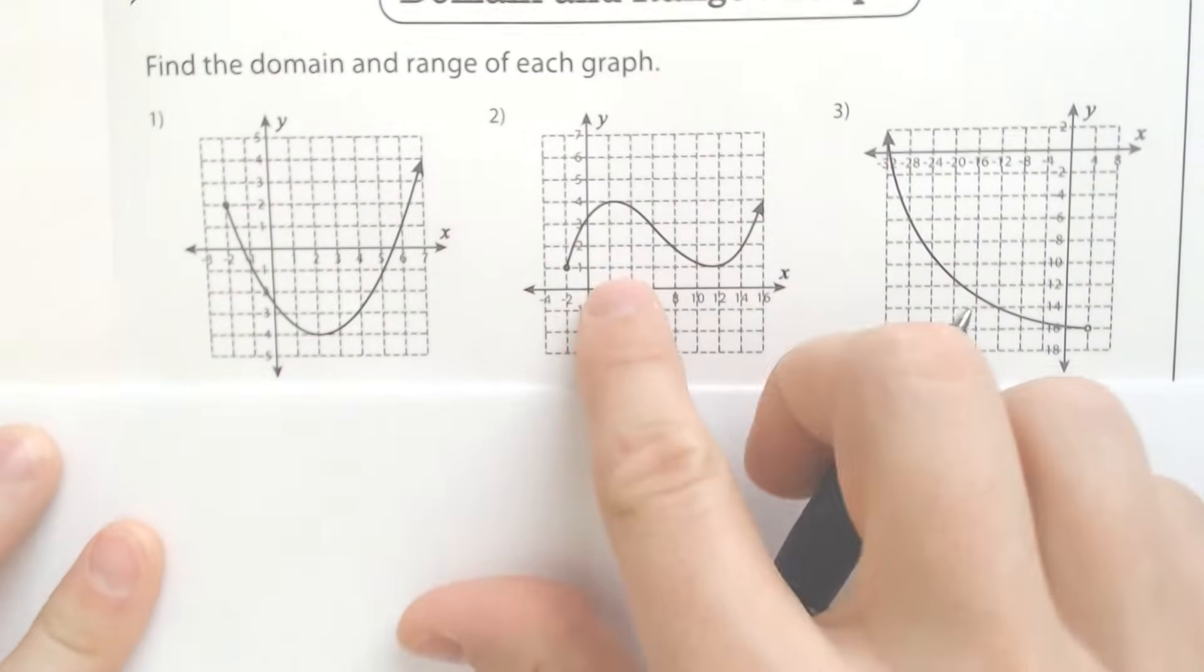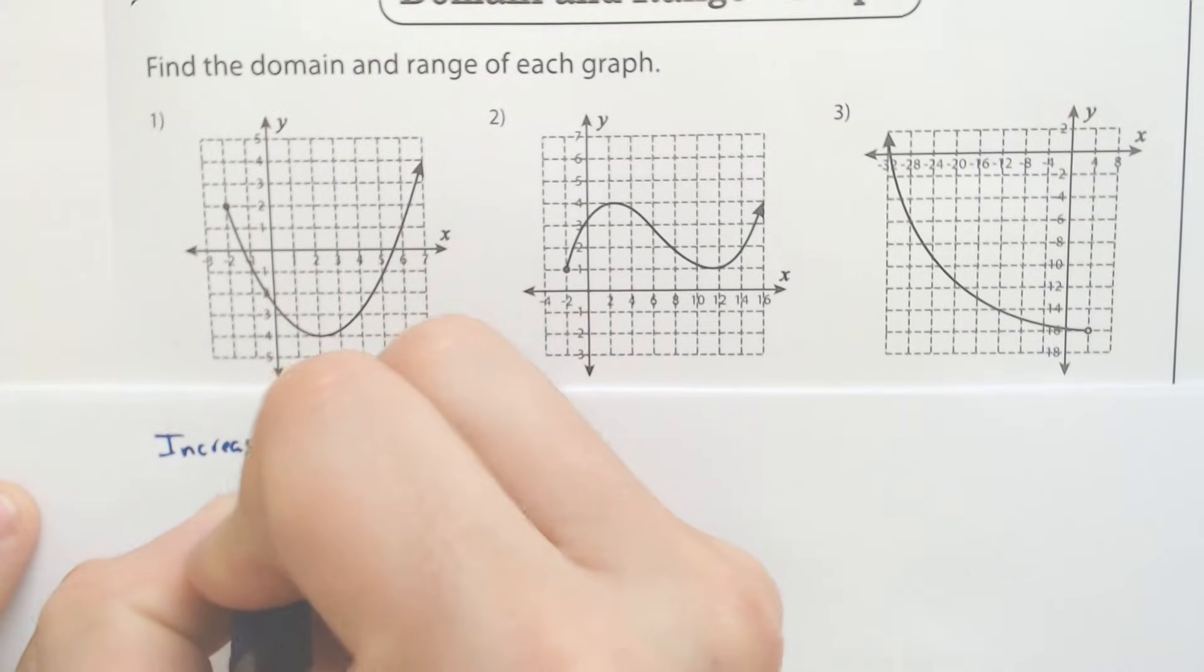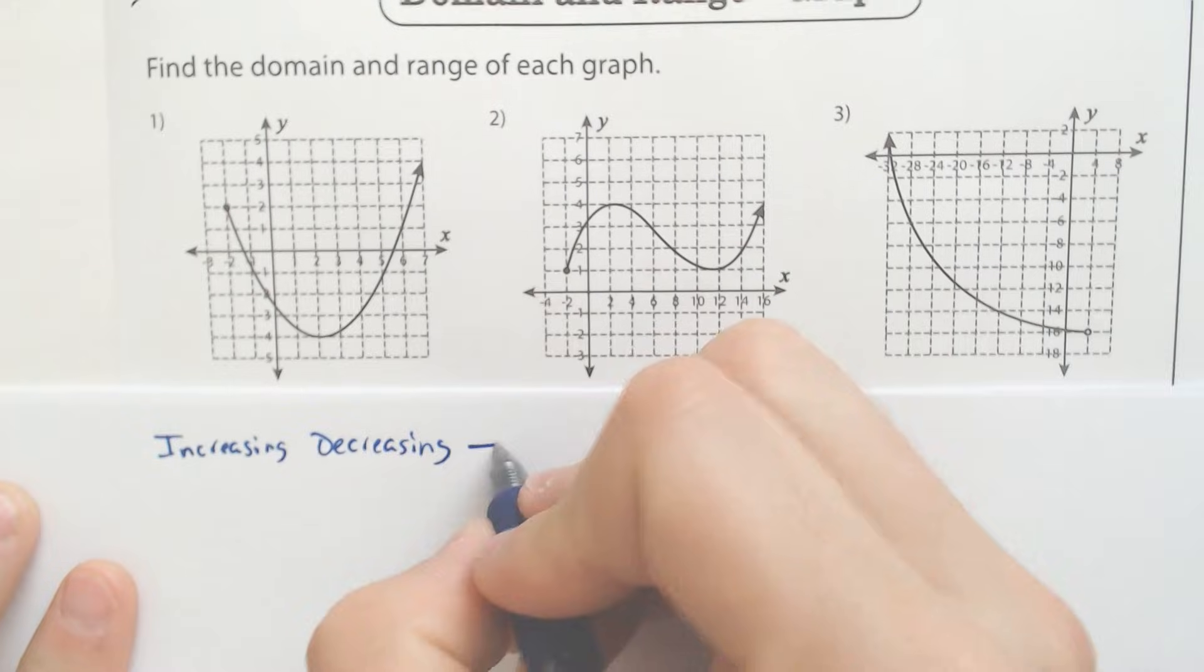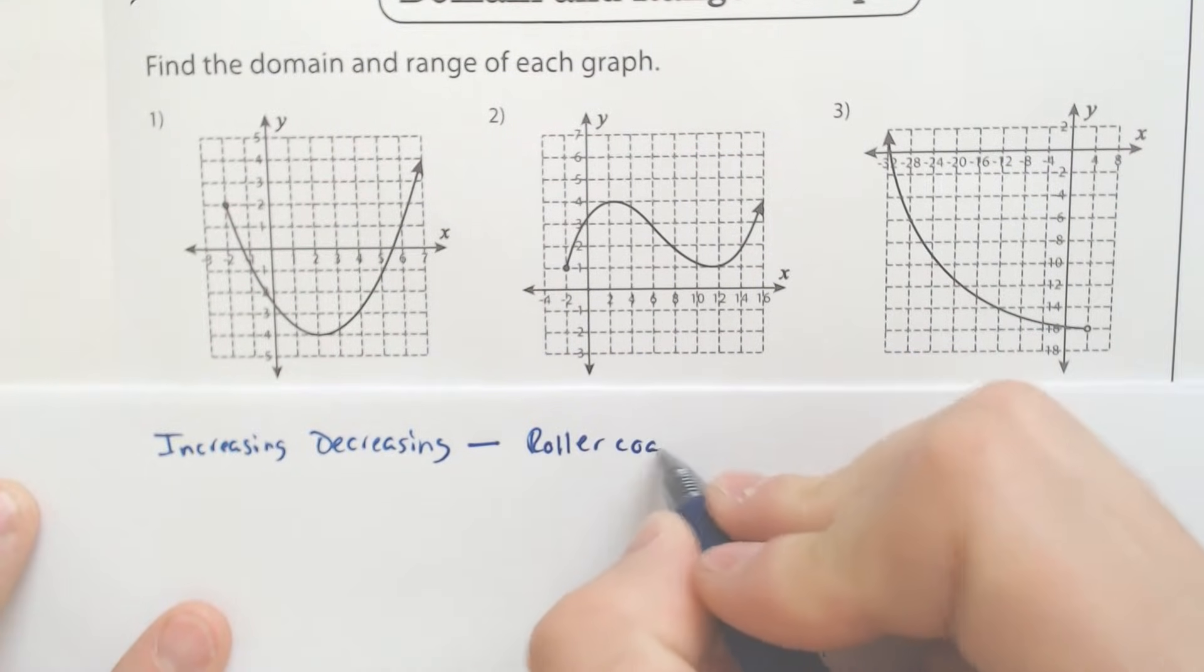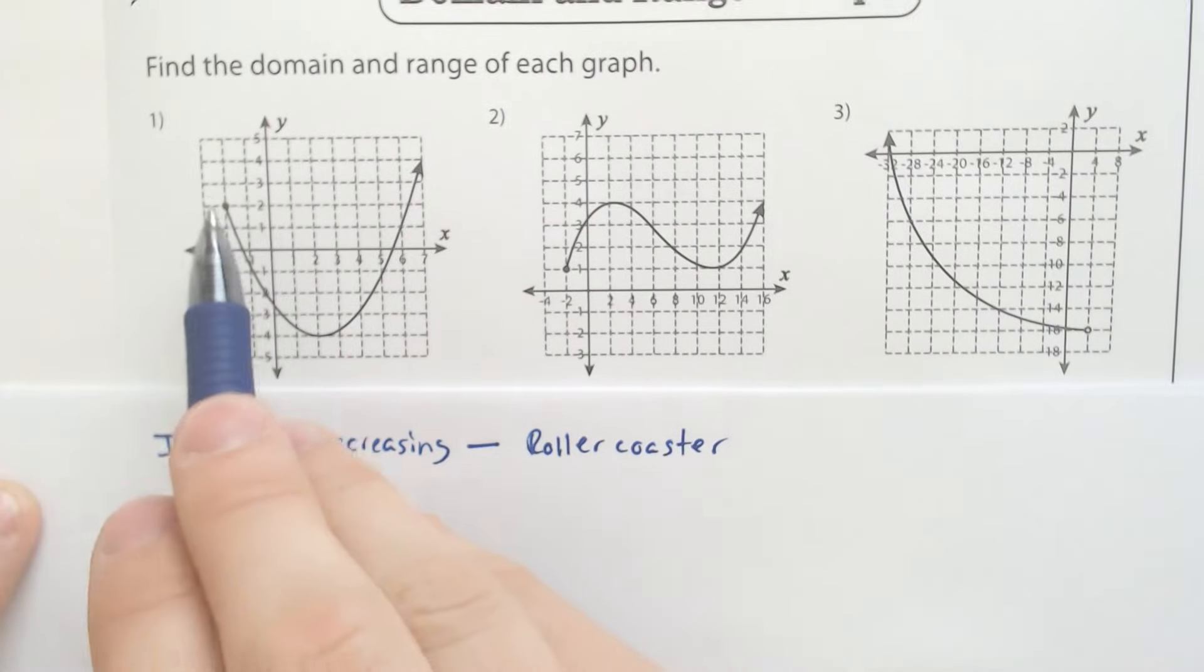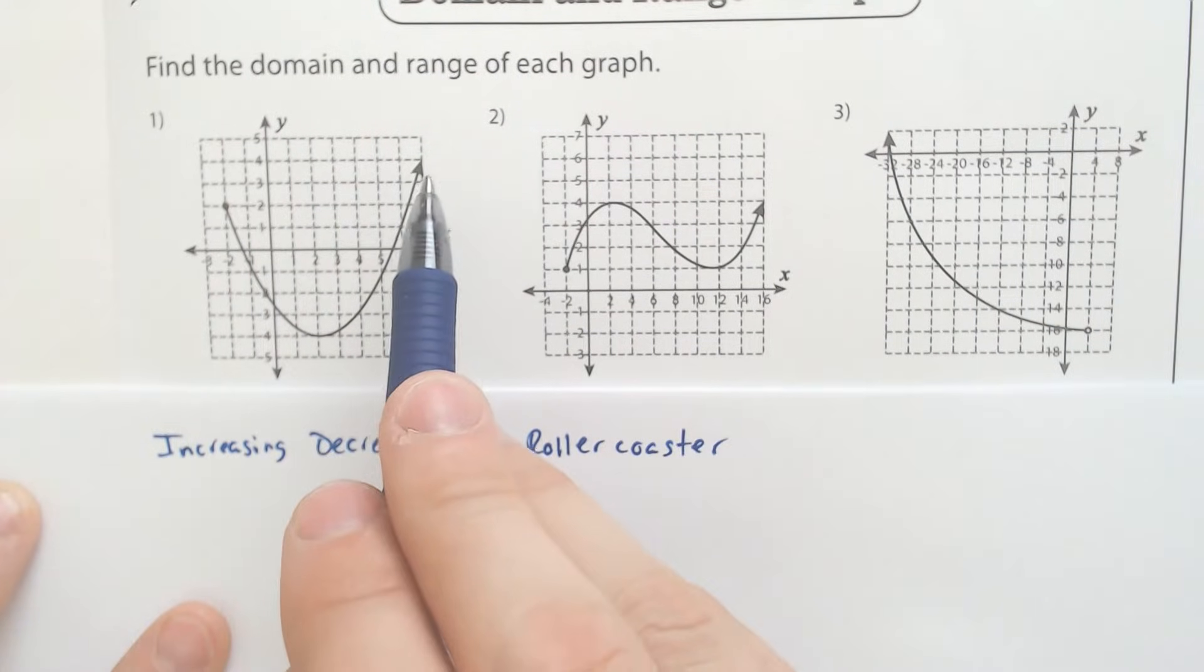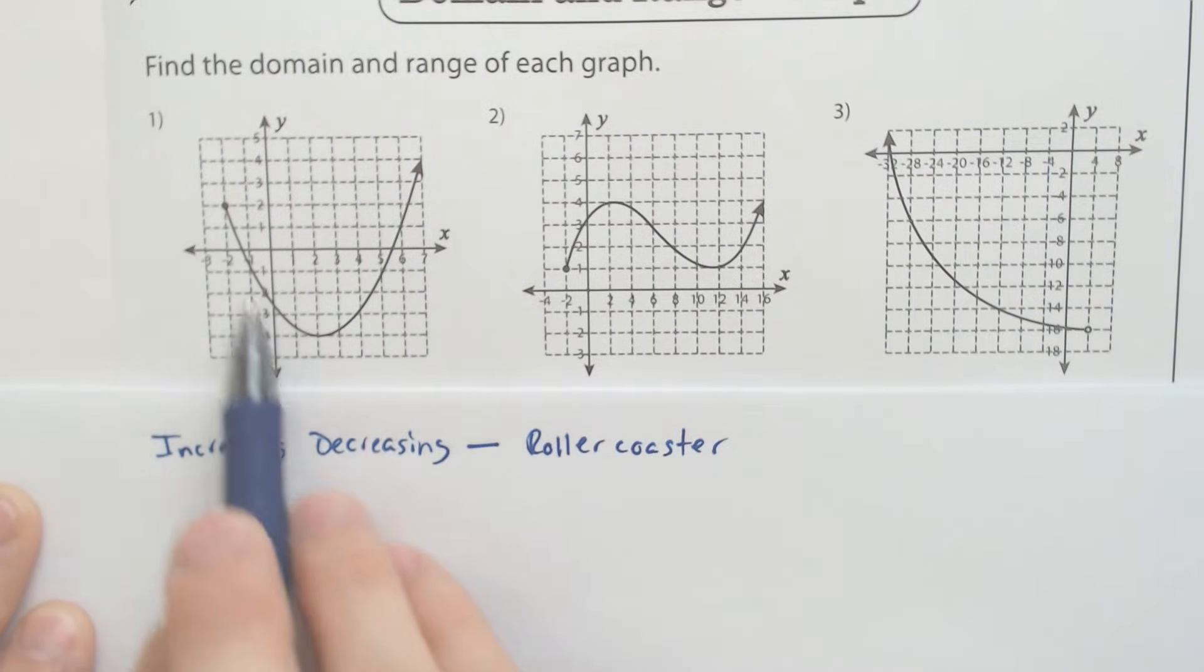So when you are talking about increasing or decreasing, I want you to think like a roller coaster. When are you going down and having a good time? And when are you going up and maybe freaking out because you've got to come back down? That is increasing and decreasing on a roller coaster from left to right.